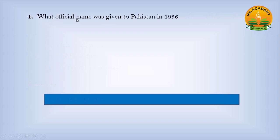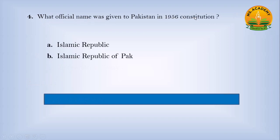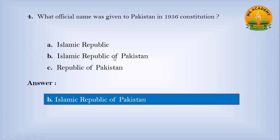What official name was given to Pakistan in the 1956 Constitution? Option A, Islamic Republic; Option B, Islamic Republic of Pakistan; Option C, Republic of Pakistan. Answer: B — Islamic Republic of Pakistan.